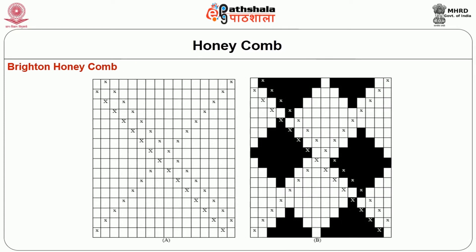Brighton honeycomb weaves usually repeat on threads in multiples of 4. The construction of a 16-thread Brighton honeycomb is depicted in figure 5.2. Diagonal marks are introduced from left to right and right to left, with a double row of marks creating a diamond base. Marks are then added to the double row to form small warp diamonds in the right and left corners of each diamond space. The float length of the central thread of each spot is one thread less than half the repeat — so for a 16-thread repeat, half is 8, minus 1 gives a maximum float length of 7 threads.